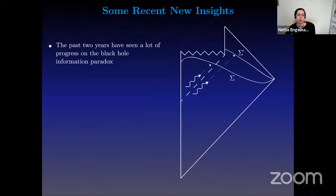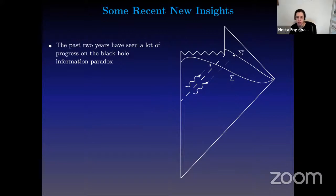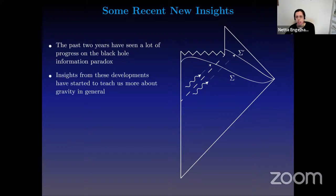Let me begin with a little bit of an overview, maybe a 60,000 foot perspective. The past couple of years have been a real renaissance on the black hole information frontier. Here I've drawn the sort of canonical image of the evaporating black hole and the Hawking quanta going in the interior and exterior modes. We've really been able to make a lot of progress in this past couple of years, which has been tremendously exciting. Insights from these new developments in the black hole information paradox have started to teach us more about gravity in general, including questioning things like the gravitational path integral and ensemble averaging.